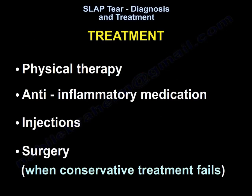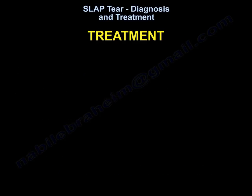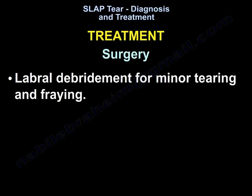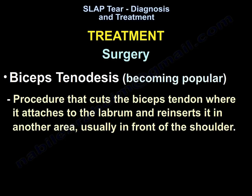Treatment options include physiotherapy, anti-inflammatory medication, injection, and surgery when conservative treatment fails. Surgical options include labral debridement for minor tearing and fraying, and biceps tenodesis, which is becoming popular — a procedure that cuts the biceps tendon where it attaches to the labrum and reinserts it in another area, usually in front of the shoulder.